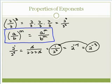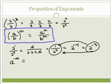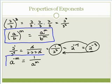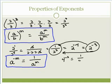So if I have something raised to a negative exponent — let's go with a raised to the negative m — that's equivalent to 1 over a to the m. For example, if I have 4 raised to the negative 2, to get rid of that negative exponent we write it as 1 over 4 squared, which is 1 sixteenth. It's not negative 16 — it's 1 sixteenth.